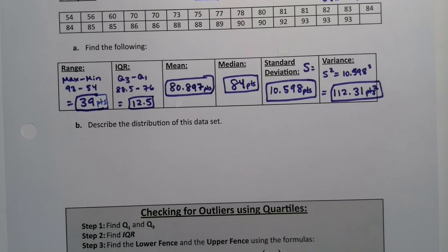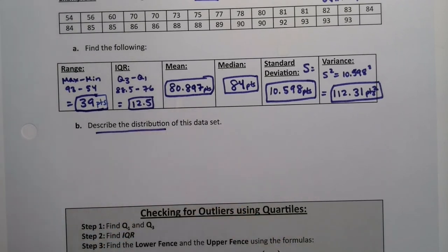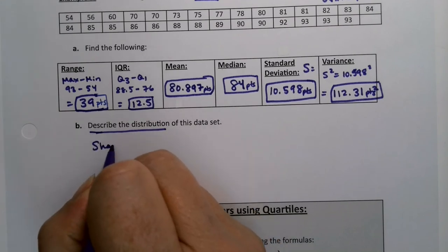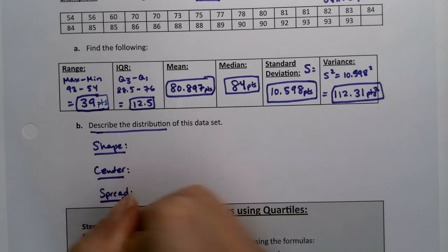Let's describe the distribution. Describing this distribution requires three things. We want to know the shape, the center, and the spread. So we don't just want the shape, although we can get that. We want the shape, we want the center, and we want the spread.